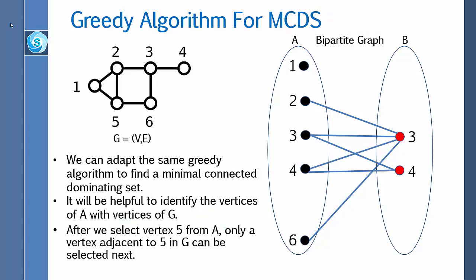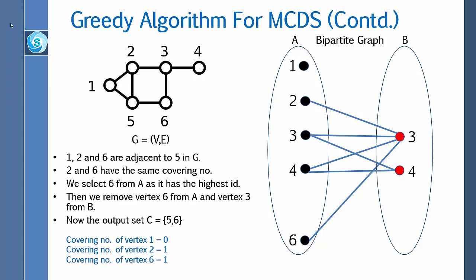We can adapt the same greedy algorithm to find a minimal connected dominating set. It is helpful to identify the vertices of A with vertices of G. After we select vertex 5 from A, only a vertex adjacent to 5 in G can be selected next. Vertices 1, 2, and 6 are adjacent to 5 in G. Vertices 2 and 6 have the same covering number, so we select 6 from A as it has the highest ID. We remove vertex 6 from A and vertex 3 from B. The output set C = {5, 6}.